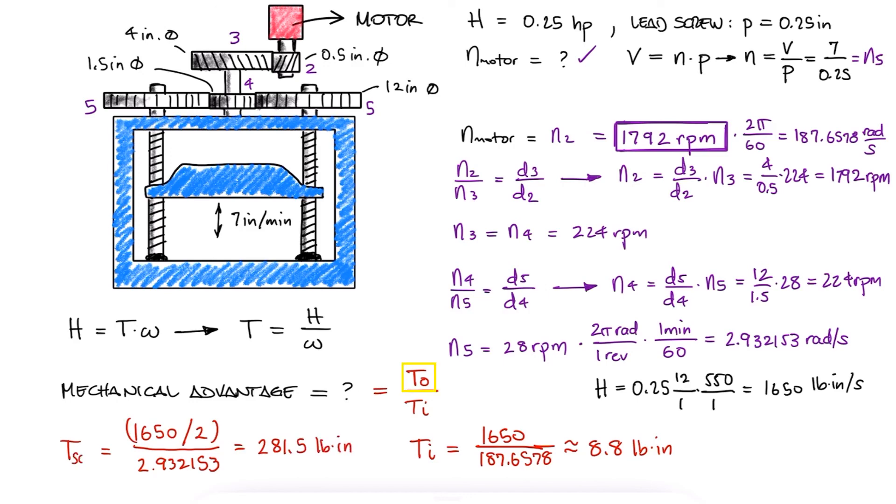Since the output torque is two torque values of 281.5, the mechanical advantage is 64.